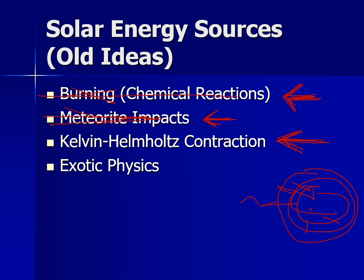But then they realized Earth was much older than that. Scientists started finding dinosaur fossils dating back tens of millions of years; the fossil record goes back hundreds of millions of years; and eventually the realization was that Earth is billions of years old. So Kelvin-Helmholtz contraction definitely cannot be the source of the sun's energy, because the sun had to be at least as old as the Earth. Some other kind of physics had to be at work, but no one knew what it was.